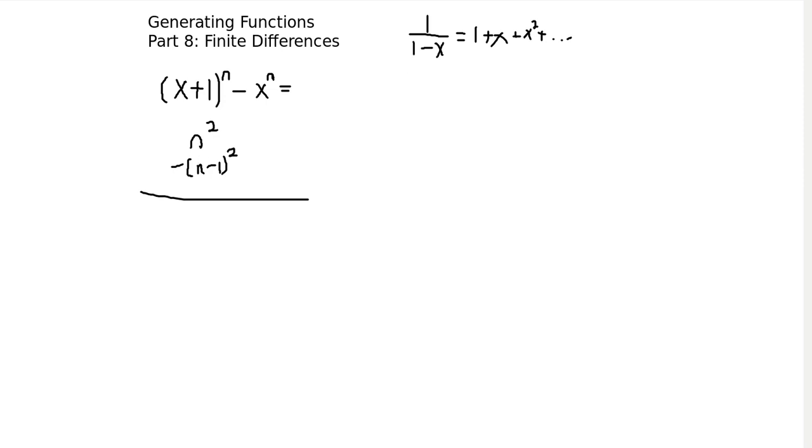And so the way we can actually create these finite differences is by multiplying by 1 minus x, right? That will give us this term shifting. It will shift the terms over by 1, and then we'll have a negative so that it subtracts. So let's see this in power.